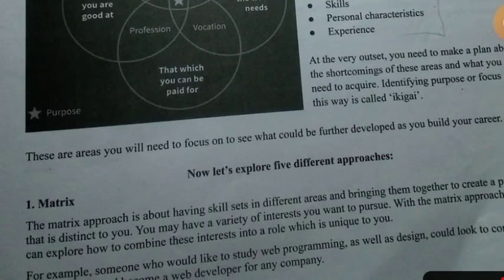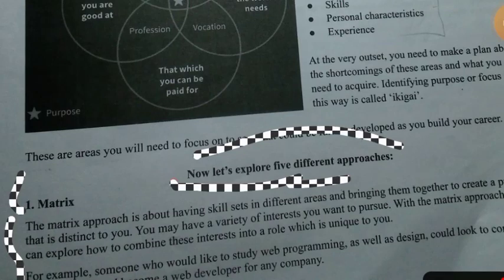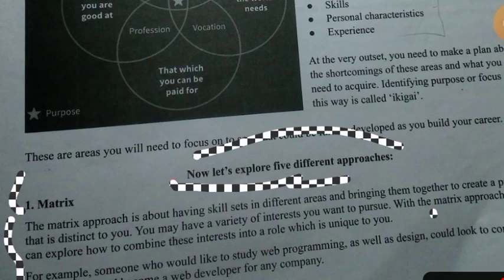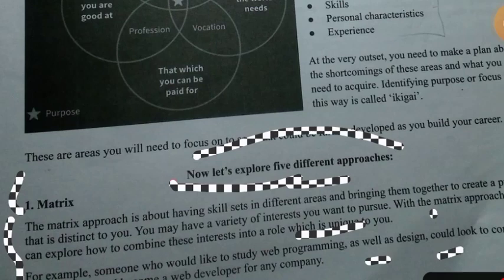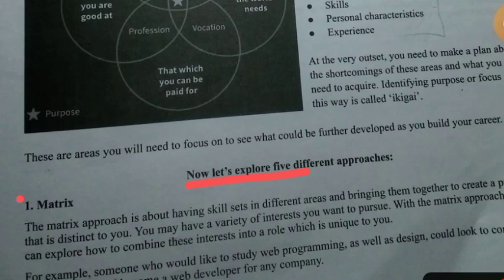Now let's explore the five different approaches. The first one is the Matrix Approach. The matrix approach is about having a skill set from different areas and bringing them together to create a distinctive profile. You may have a variety of interests, and with the matrix approach you can explore how to combine these interests into a unique role. For example, someone who likes programming and designing can combine both interests.